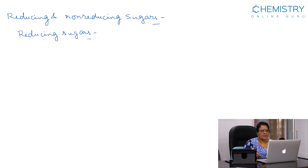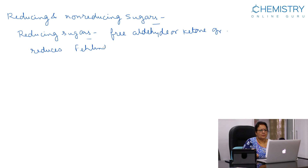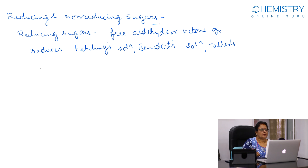A reducing sugar is a saccharide that is capable of acting as a reducing agent because it has a free aldehyde or ketone group. Saccharides which reduce Fehling's solution, Benedict solution, and Tollens reagent are called reducing sugars.